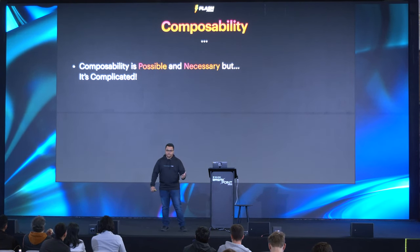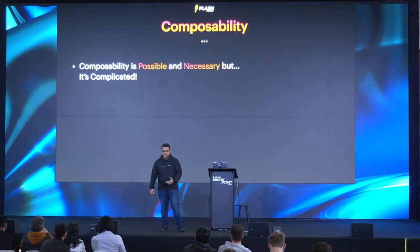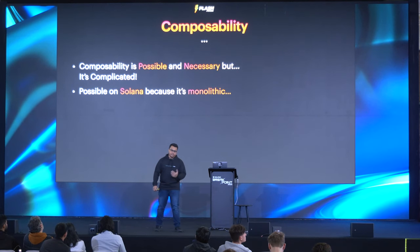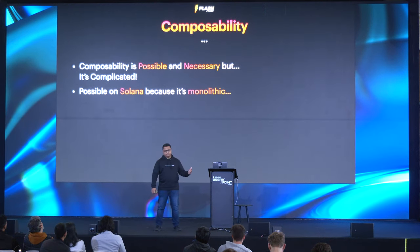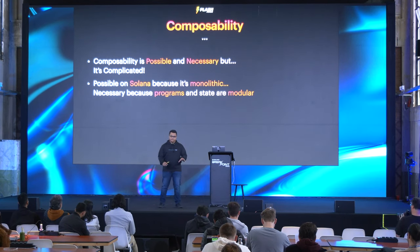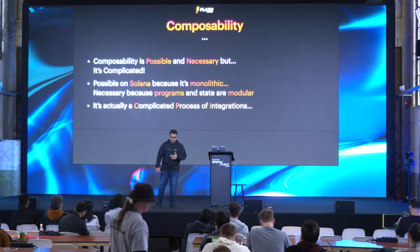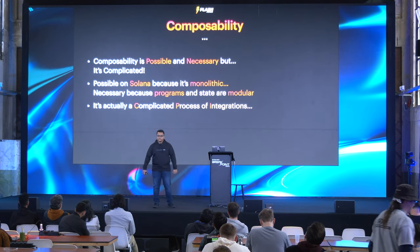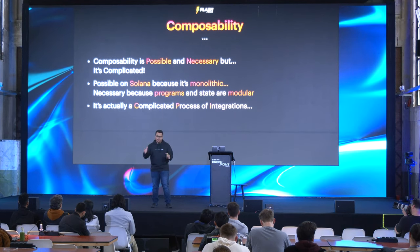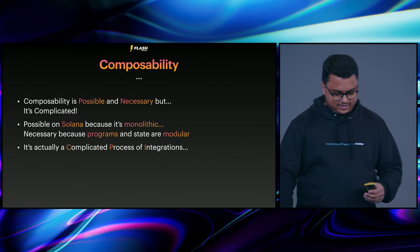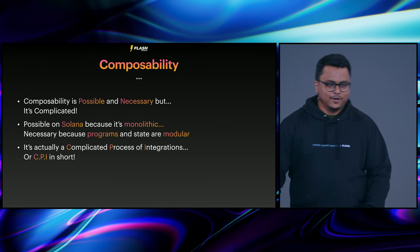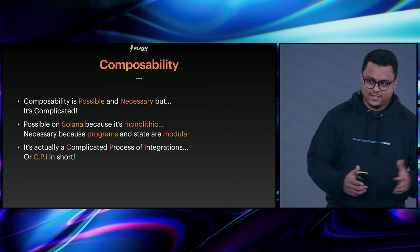Every time you're transferring a token, you're composing over a program that's already there and interacting with it. It's possible on Solana because Solana is monolithic, which allows us to compose. We have a competing ecosystem in Cosmos, and the biggest trouble people building app chains there have is the lack of composability. Solana being monolithic supports composability, and composability is necessary because programs and state are modular. The process we use is CPI — Cross Program Invocation — and it's actually a complicated process of integrations.